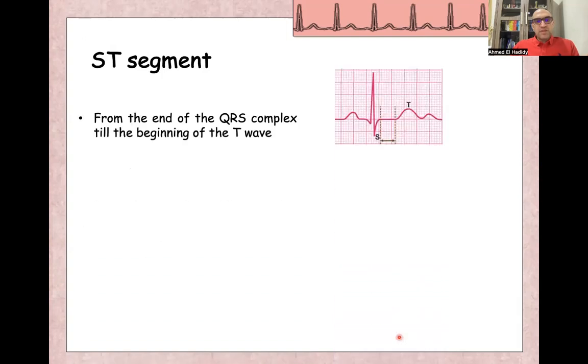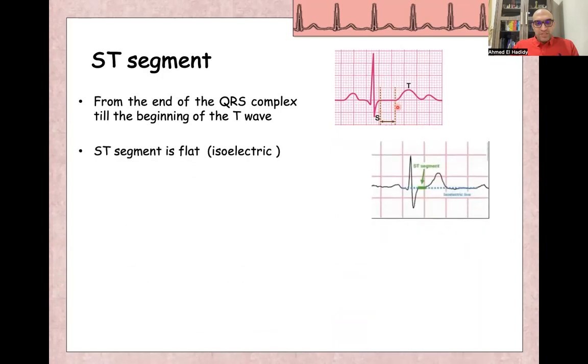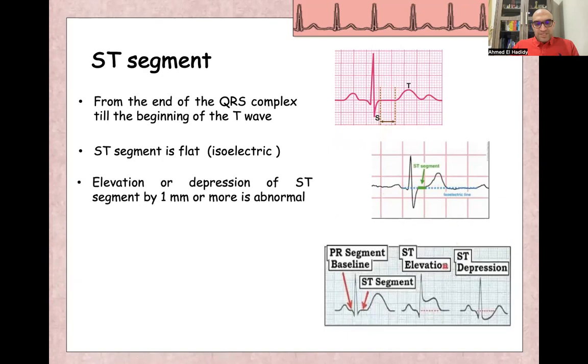ST segment starts after the end of the QRS complex, after the end of S wave, till the beginning of T wave. Usually, or normally, ST segment is isoelectric or flat when compared to PR segment here before the QRS complex. So it will be isoelectric in the same horizontal line as PR segment. Any ST segment elevation or ST segment depression more than one millimeter or one small square is significant.